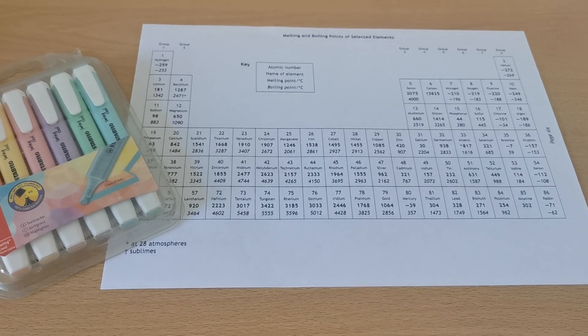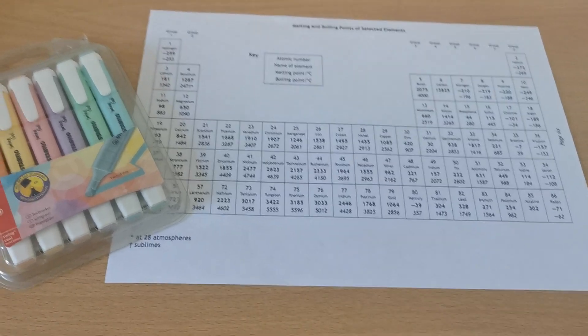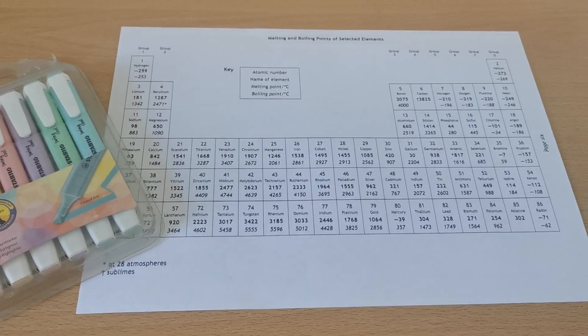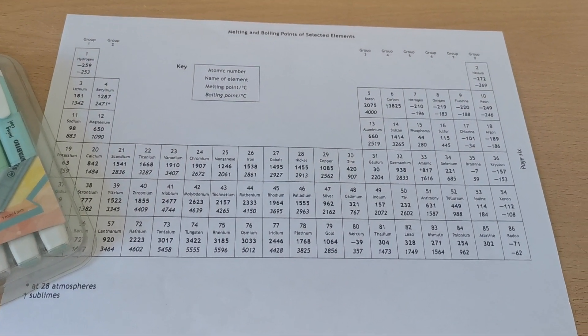The first thing we're going to look at is the structure of the elements in the periodic table. To do this activity, you're going to need a printed out page of the data booklet.